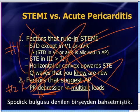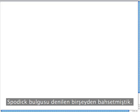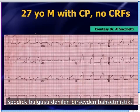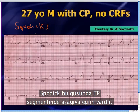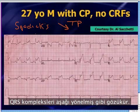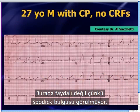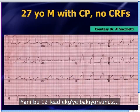We also talked about the spoptic sign, which is downsloping of the TP segment — it looks like the QRS complexes are heading downward. That's not helpful here either because there's no evidence of spoptic sign. So you're looking at this 12-lead EKG and still wondering: is this STEMI versus pericarditis?